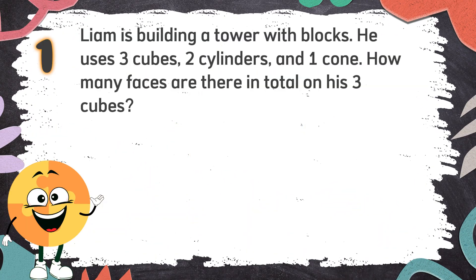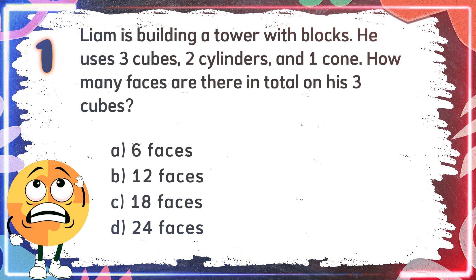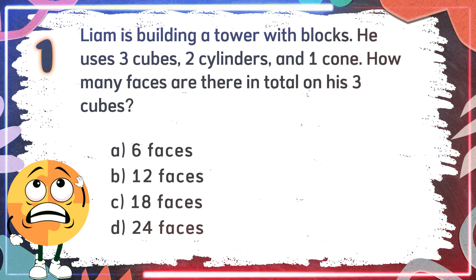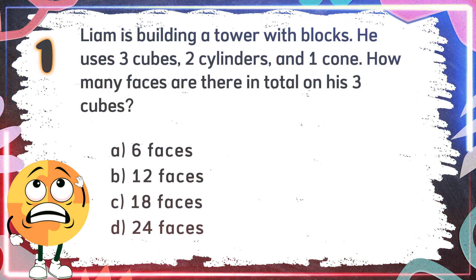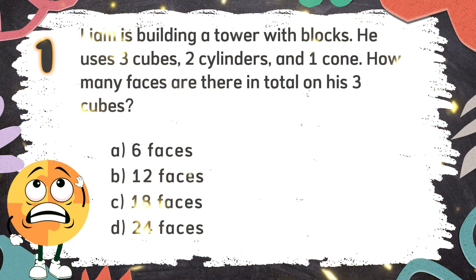Difficult Round. Number 1: Liam is building a tower with blocks. He uses three cubes, two cylinders, and one cone. How many faces are there in total on his three cubes? The choices are A. Six faces, B. Twelve faces, C. Eighteen faces, D. Twenty-four faces.